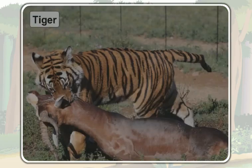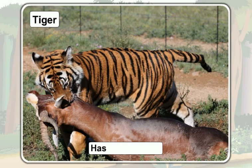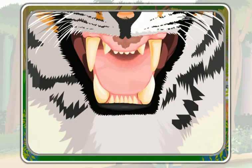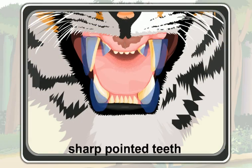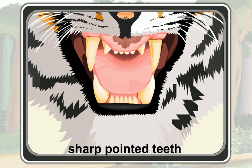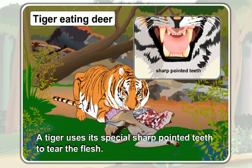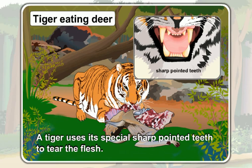A tiger also has sharp claws. It uses them to tear the flesh of its prey. A tiger has special sharp, pointed teeth at the front of its mouth. If the flesh of its prey is strong enough, a tiger uses its special sharp, pointed teeth to tear the flesh.